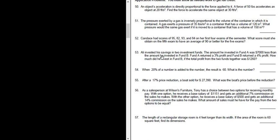Number 53. Ali invested his savings in two investment funds. The amount he invested in A was $7,000 less than the amount invested in B. Fund A returned 3% and Fund B returned 4%. How much did he invest in B if the total profit was $1,260?